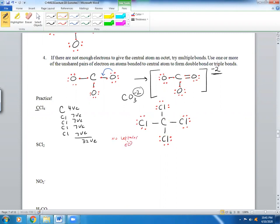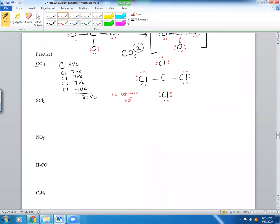But let's look at carbon. Is carbon happy? Yes, it is. It has 8: 2, 4, 6, and 8. Do you need any double bonds? You did not, because the central atom is happy. Let's move on to the next one.